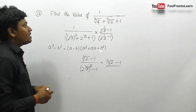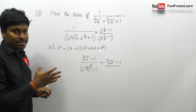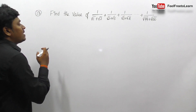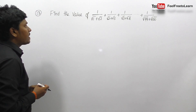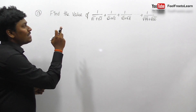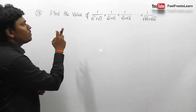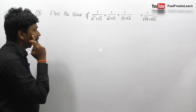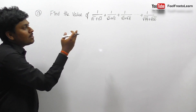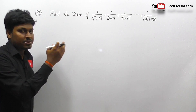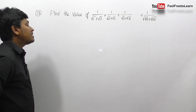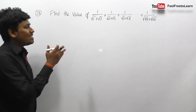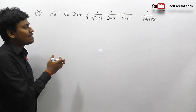Finally we can say that the answer for question number 12 is ∛2 - 1. Always remember: if you need to crack a question in algebra, you should know all the different formulas. Question number 13: find the value of 1/(√1+√2) + 1/(√2+√3) + ... continuing until 1/(√99+√100).